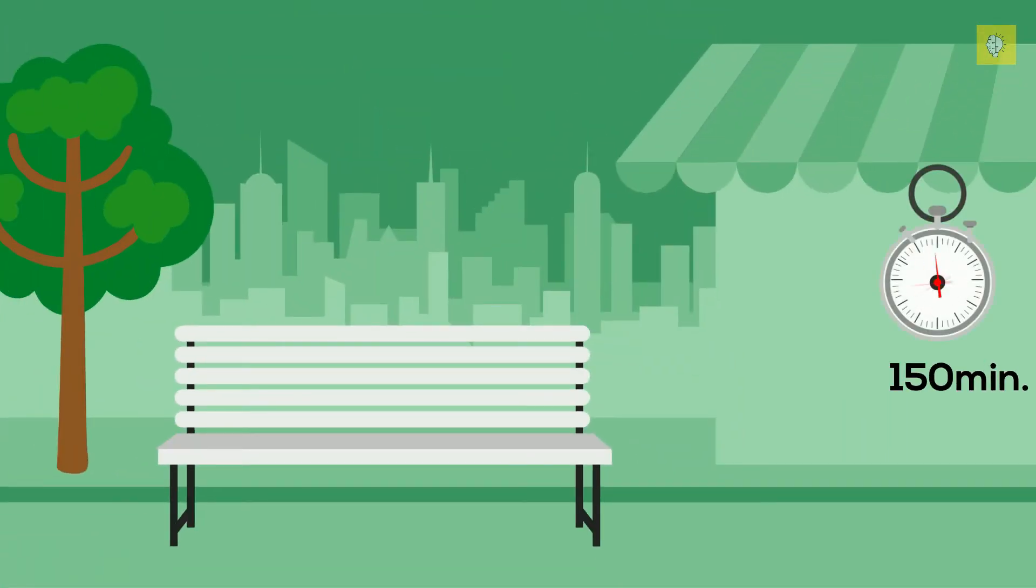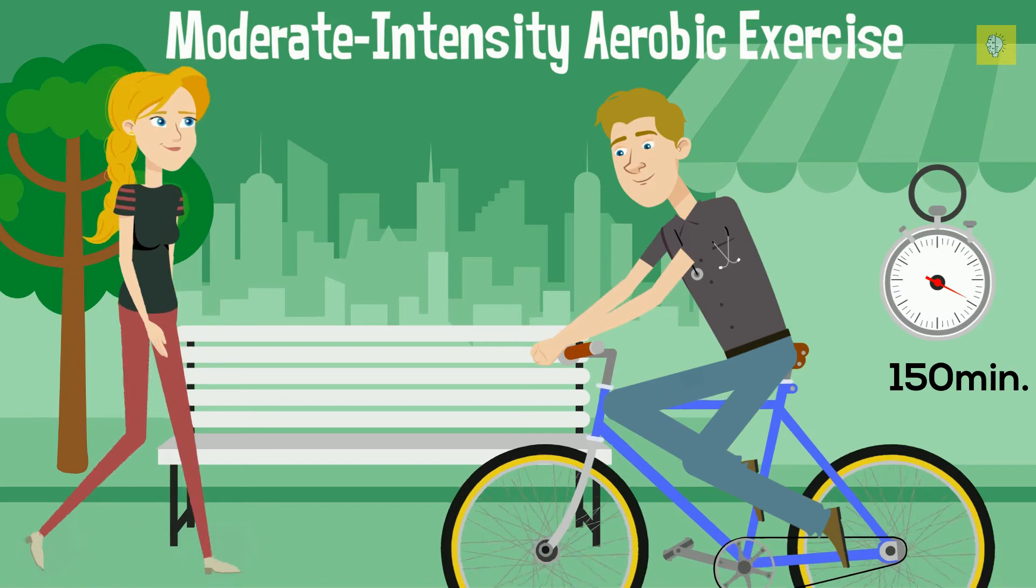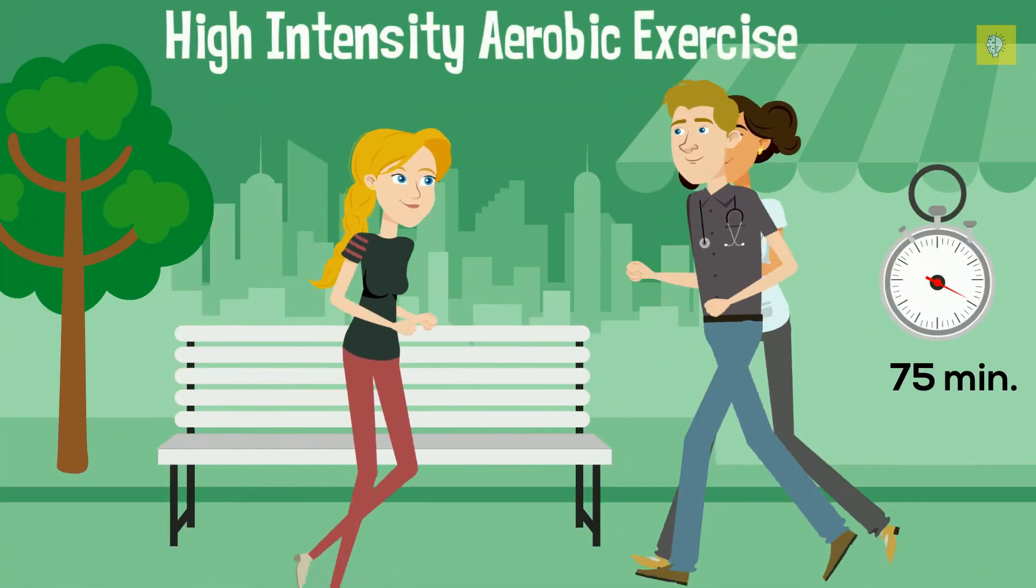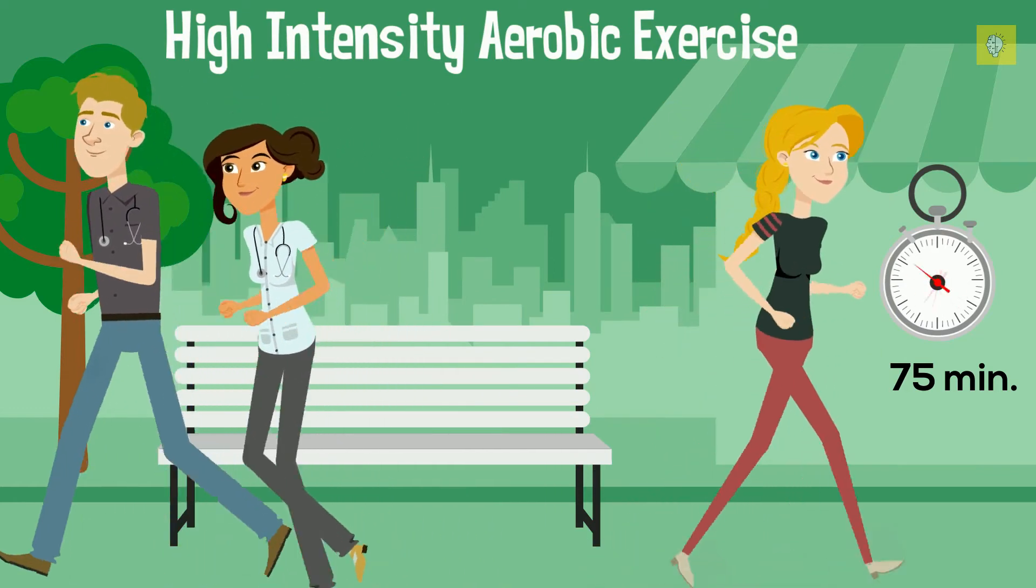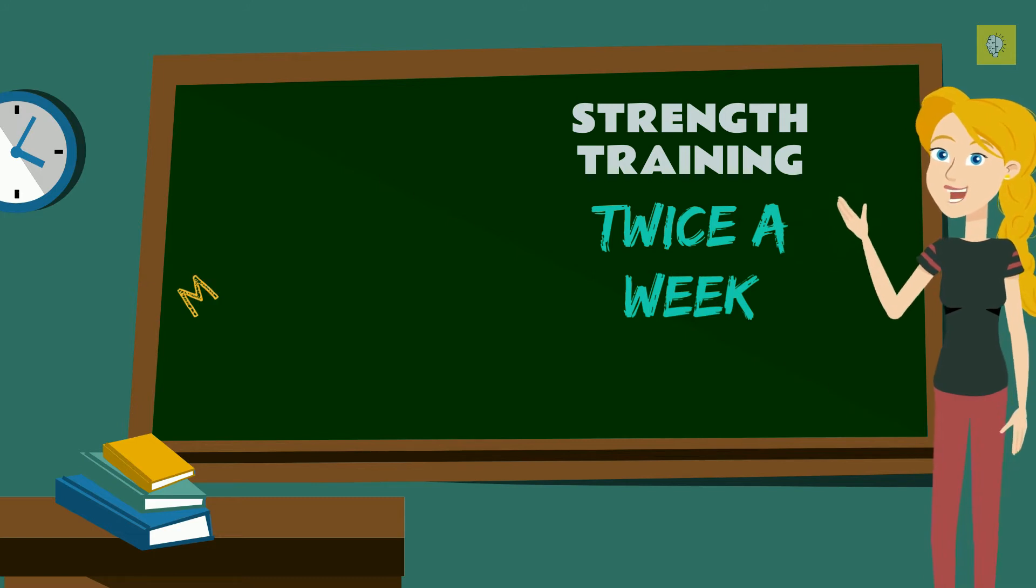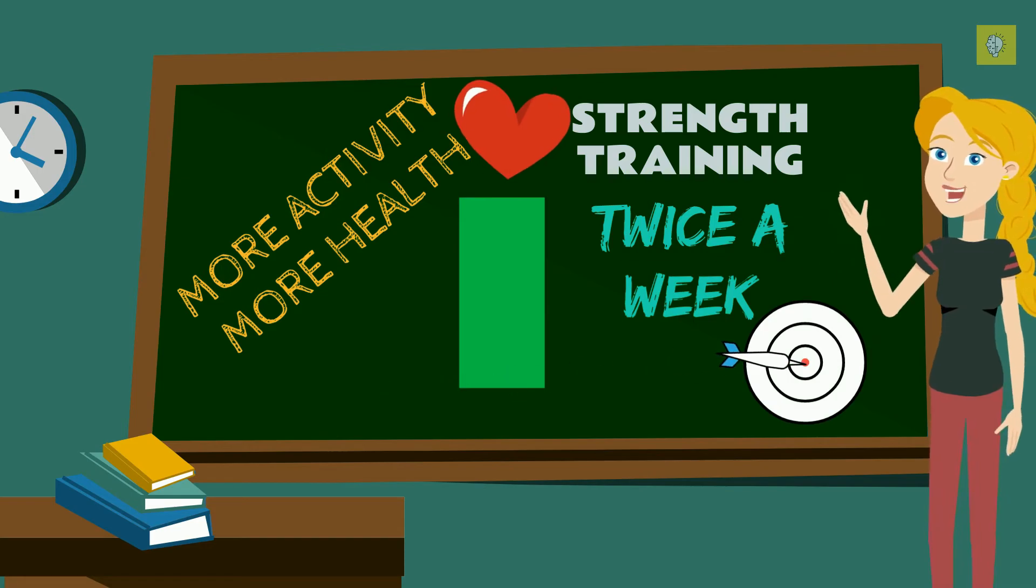Adults should be getting at least 150 minutes of moderate intensity aerobic exercise like walking, jogging or cycling, or 75 minutes of high intensity aerobic exercise like running every week. You should also be doing strength training at least twice a week. Moreover, more activity has been found to be linked to even more health benefits, so aim high.